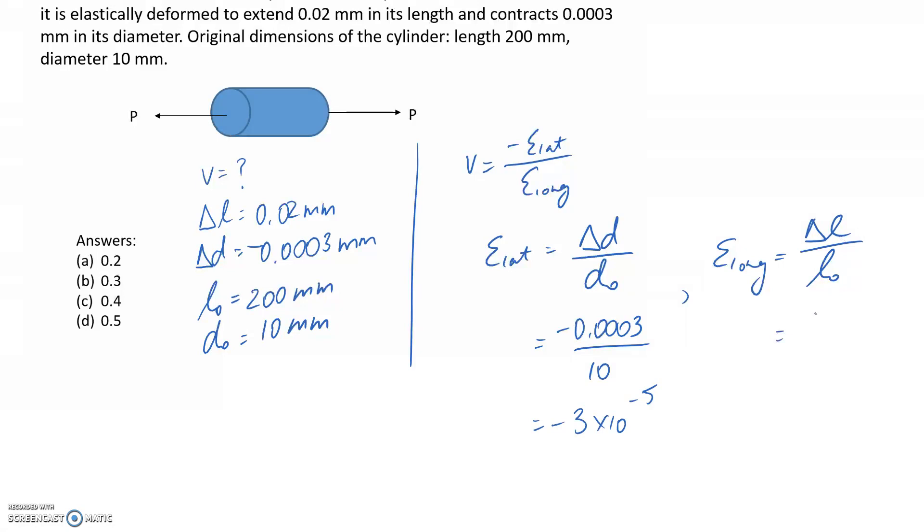For the longitudinal one, the change in length is going to be 0.02 divided by 200. So this one works out to be 1 by 10 to the negative 4. Again, it was millimeters divided by millimeters, so they cancel, and it ends up being unitless.